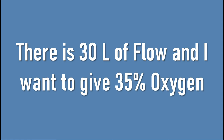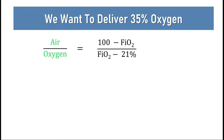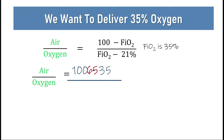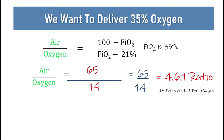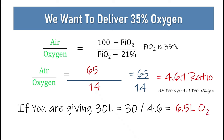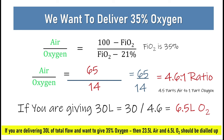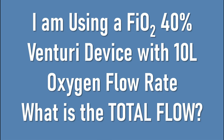Another scenario: 30 litres of flow and I want to give 35% oxygen — how many litres of oxygen do I need? Feeding 35% into the equation: (100 − 35) ÷ (35 − 21) = 65 ÷ 14 ≈ 4.6 to 1 ratio — about 4.5 parts air to one part oxygen. With 30 litres total flow: 30 ÷ 4.6 ≈ 6.5 litres of oxygen. So you need 23.5 litres of air and 6.5 litres of oxygen to deliver 35% oxygen at 30 litres of flow.